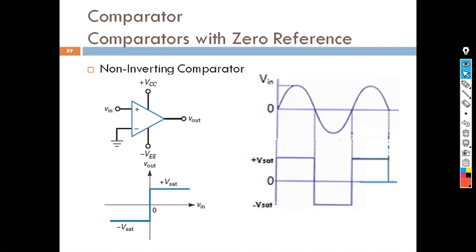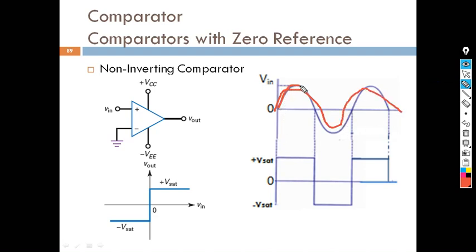Before moving on, you can see the output of the zero detector. This is the output and this is our input. When the input is greater than zero, the output is plus Vsat. When the input goes in the negative direction, the output is negative Vsat, saturated as negative. Once again it is saturated as positive.